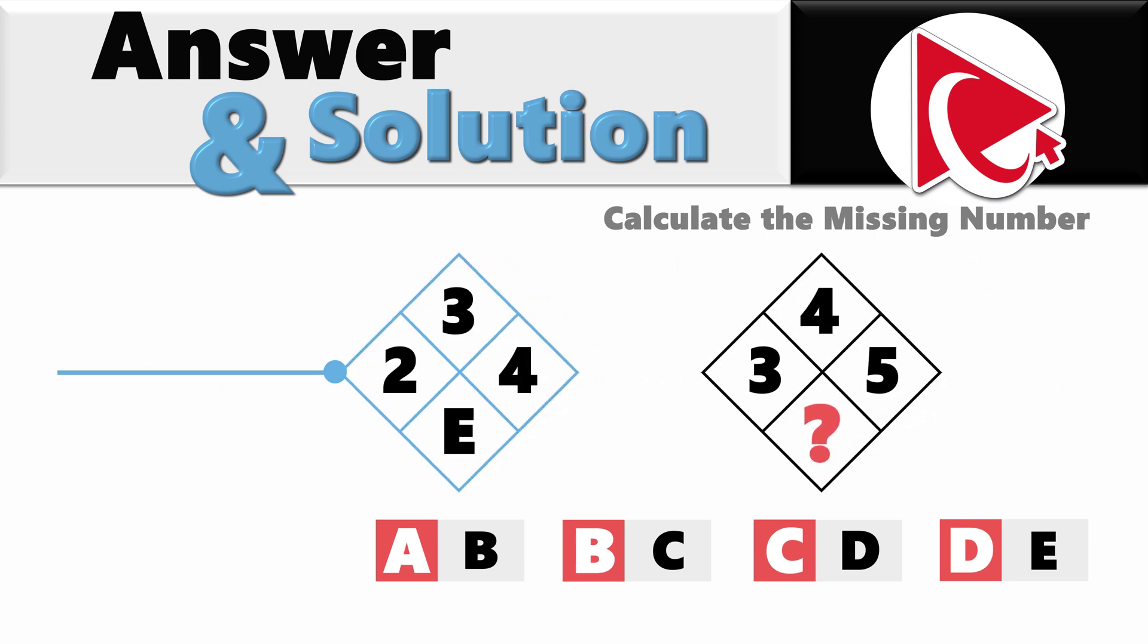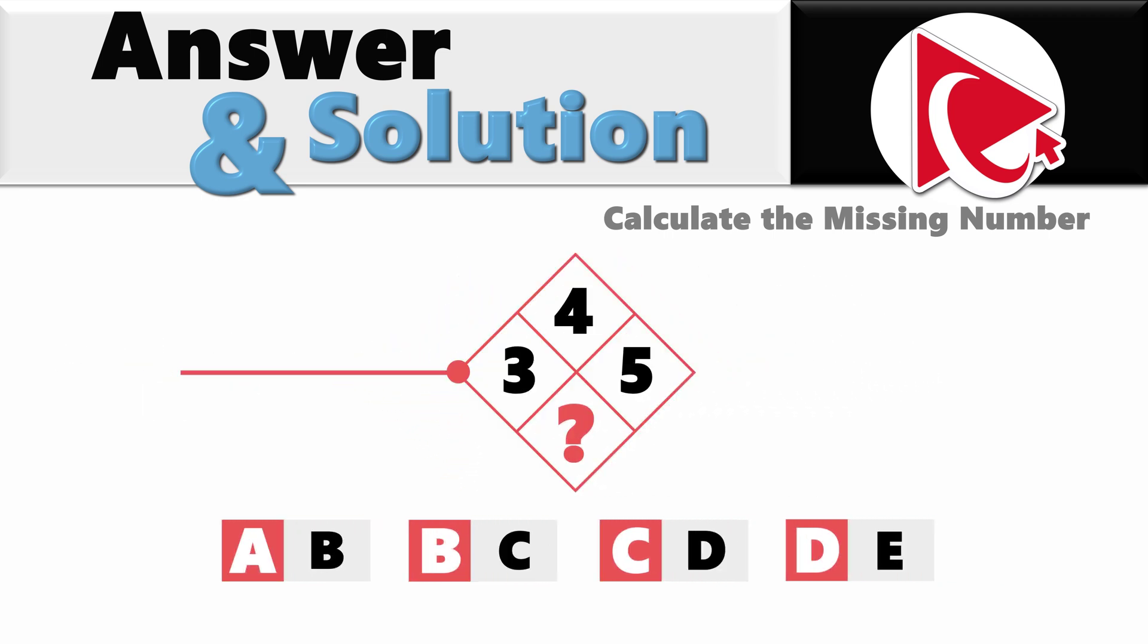Let's look at the second diamond. In the second diamond the digits are 2, 3 and 4. And the letter is E. 2 plus 3 plus 4 equals 9. And in the word 9 the last letter is E. Now let's calculate the missing letter.